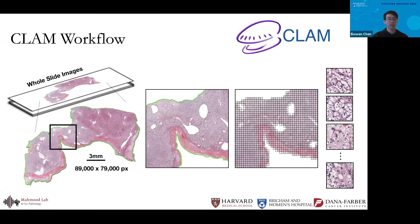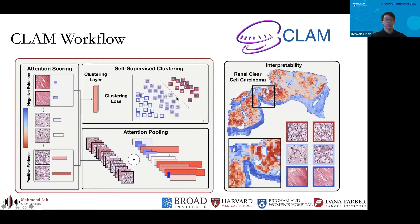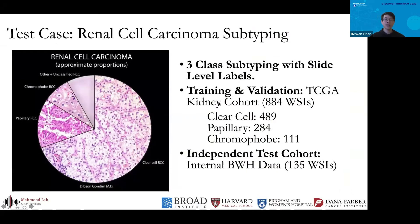The typical workflow for CLAM starts with a whole pathology slide, from which we segment the tissue and create patches. We run the patches through a model with an attention backbone that assigns attention scores to each patch. This feature extraction process ultimately leads to the final classification of the slide, and from the attention scores we can create interpretable heat maps showing which areas of the slide the model is attending to most.